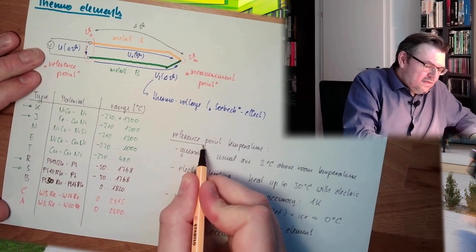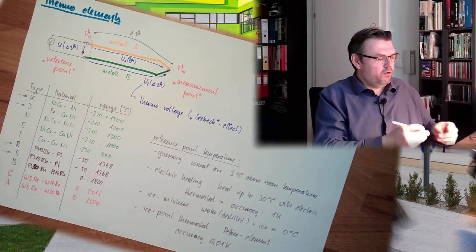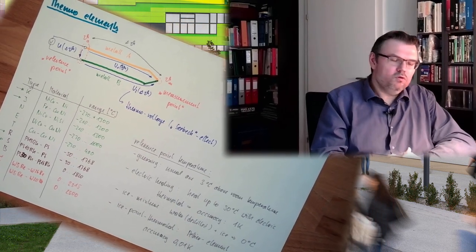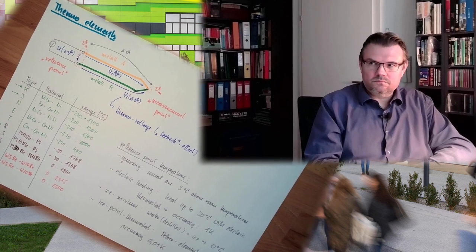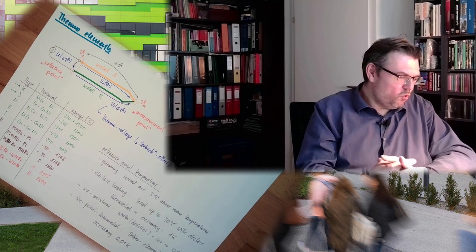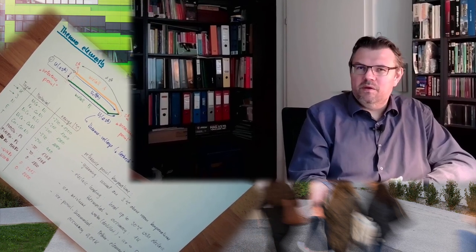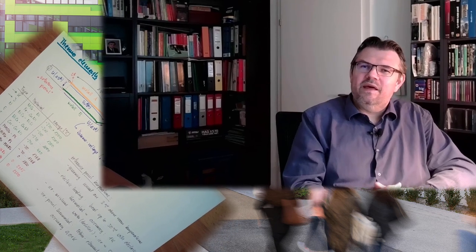So this is how thermo elements are working, with the help of the thermo voltage, the Seebeck effect. Another form of temperature measurement. Next time, I am sure you have already seen images of objects where hot objects appear other than cold objects. Hot objects are usually red or even white, and cold objects are usually displayed blue. So this is called thermography.